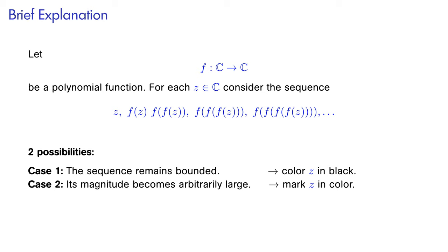Color plays an important role here. It encodes the escape speed of this sequence. This is the number of iterations it has taken before the magnitude of the point exceeds a predefined threshold. The edge of the black area obtained by this procedure is called the Julia set of the function f.